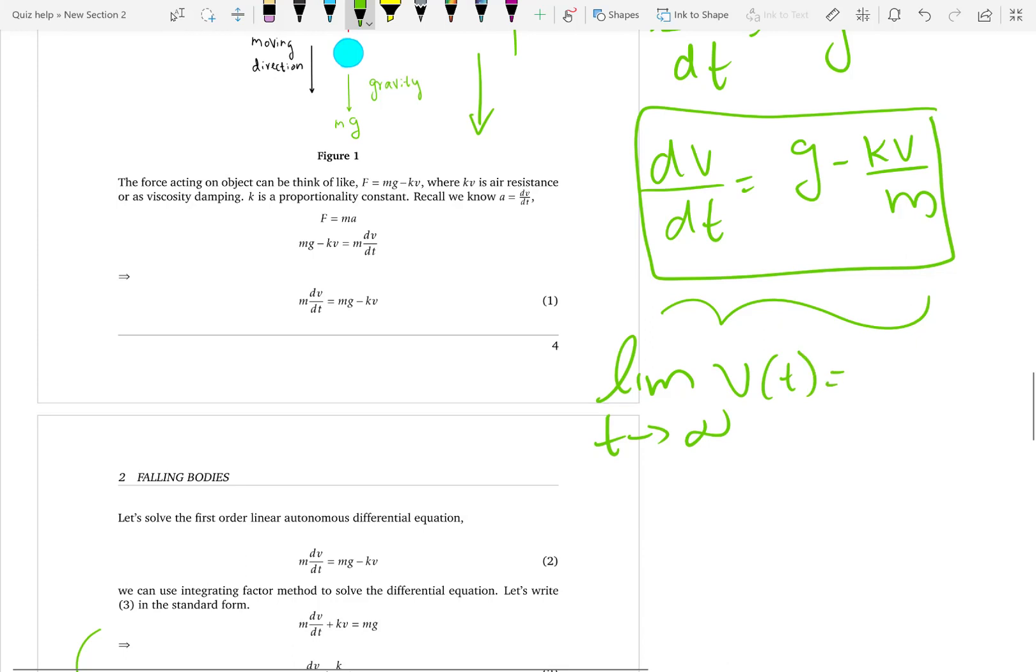Eventually what happens is that when this metal ball falls from a building or something, it will change the speed, but it will approach a certain speed where no longer this velocity will change.